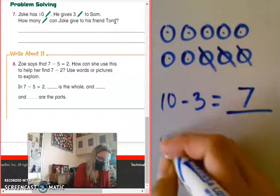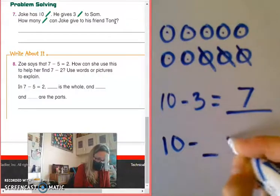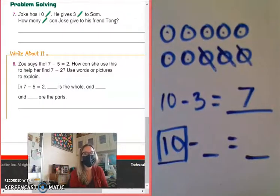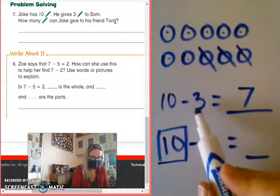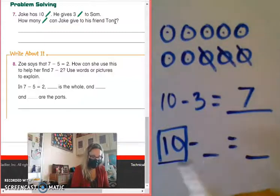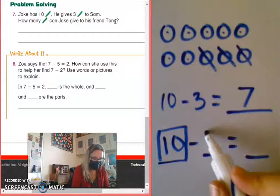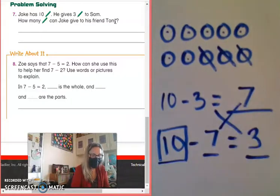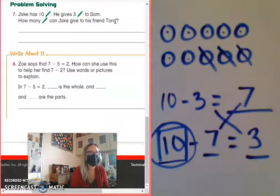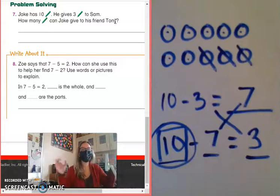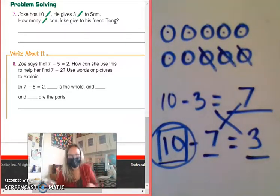Can anybody tell me what the related subtraction fact would be for this problem? Remembering that my 10, which is my whole, has to be my first number. Beckett? 10 minus 3 equals 7 is what I have here. What would the related fact be? 10 minus 7 equals 3. I flip flop my parts. I can't move my whole, okay? In subtraction, the big number always comes first. Say that. In subtraction, the big number always comes first. You got it.